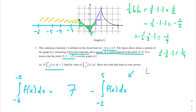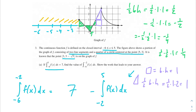From 1 to 5, we can split the region into a square and a triangle. The area of the square is base times height, which is 1. The area of the triangle is 1/2 times base 1 times height 2, giving 1. So the total area of this section is 2.